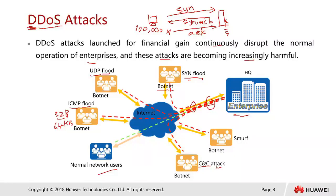In a CnC attack, if a company has a web page with a search function, hackers can repeatedly send search requests to that server. A search consumes CPU and memory on the server. One search is fine, but hundreds of thousands of simultaneous queries can bring the server down.